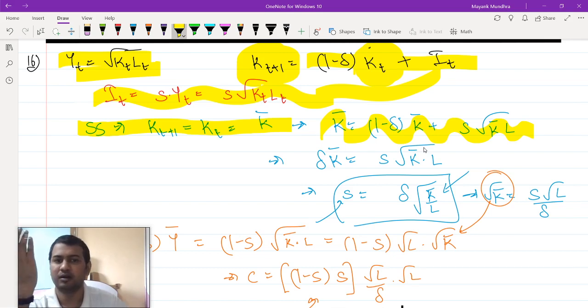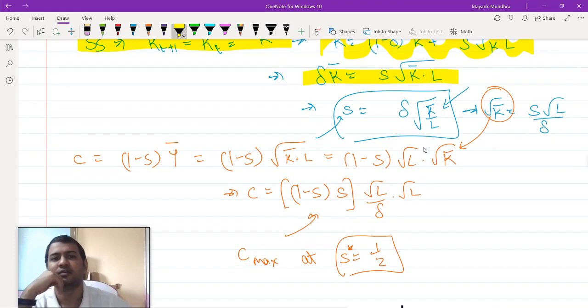I can cancel K bar on both sides. I will get delta times K bar equals to s times under root K bar into L.